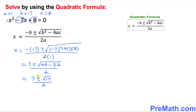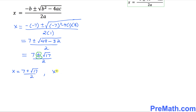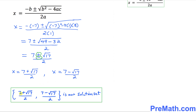Now let's split the plus and minus signs. That gives us x equal to 7 plus square root of 17, divided by 2 as one solution, and x equal to 7 minus square root of 17, divided by 2 as the other. So our solution set is (7 + √17)/2 and (7 − √17)/2.